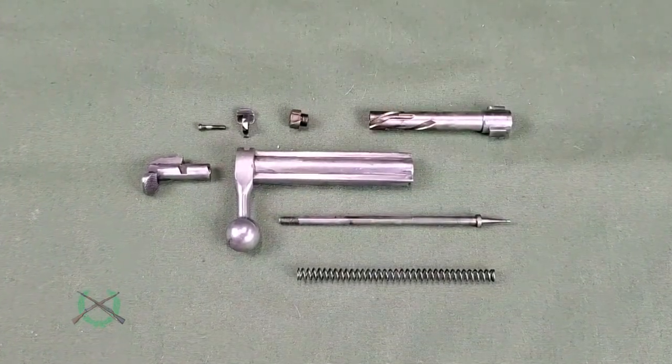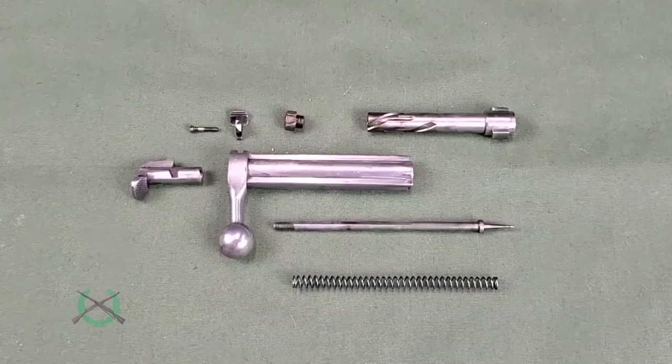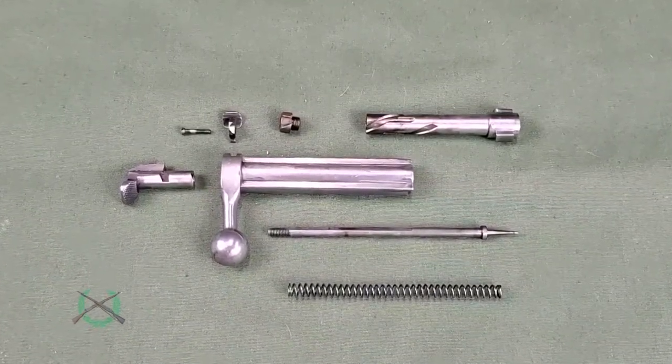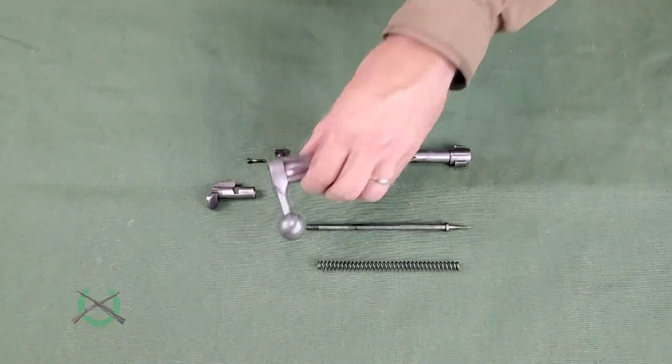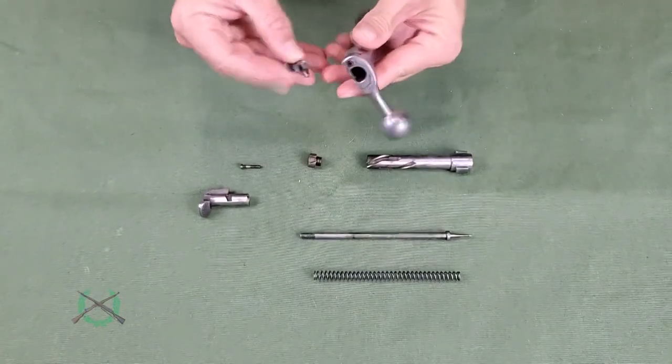The bolt is now fully disassembled for maintenance or repair. Assembly of the bolt is the reverse of disassembly. Attach the safety to the bolt body with the safety screw.